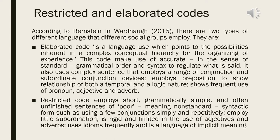The second code is restricted code, which employs short, grammatically simple, and often unfinished sentences of poor prosyntactic form — meaning non-standard — such as using few conjunctions in a simple and repetitive way. It employs little subordination, is rigid and limited in the use of adjectives and adverbs, uses idioms frequently, and is also possibly a language of implicit meaning.